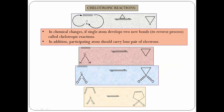Next are cheletropic reactions. In a cheletropic reaction, an unsaturated system reacts with one atom which forms two new sigma bonds simultaneously — this is called a cheletropic reaction. For example, an ethylene molecule reacting with carbon where carbon forms one bond at each terminus. Similarly, ethylene reacting with sulfur dioxide: SO₂ forms two bonds, one at each end. 1,3-Butadiene reacting with SO₂ — both ends react with sulfur dioxide forming two new sigma bonds — is also a cheletropic reaction.